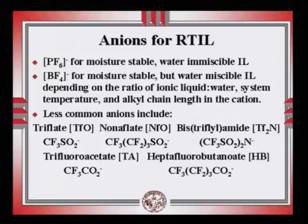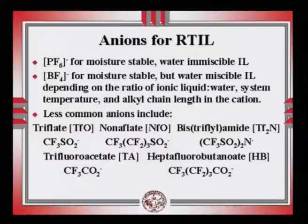Since ionic liquids will have a cation and anion, the cation and anion must be so chosen that they are not interfering with the analyte. Therefore, wherever moisture-stable ionic liquids have to be prepared, PF6⁻ is the choice, but it is water-immiscible. So if water-immiscible compounds have to be extracted, then PF6⁻ is the ideal anionic choice. But wherever water miscibility is possible, BF4⁻ can be used. There are other anions also which can be chosen.